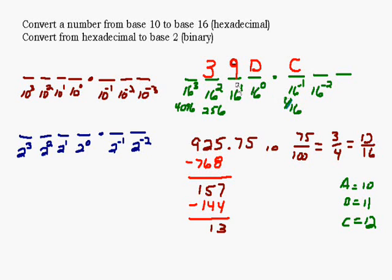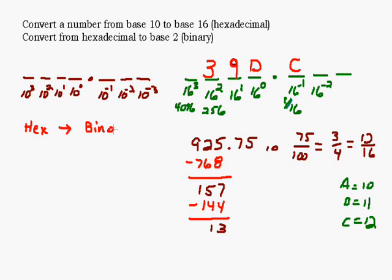So now let's take this 39D.C and convert it to binary. Now, when you do that, there's a really easy way to do that. And what you should do is generate a chart. We can go ahead and do that. You could look this up online, but it's not too bad. What you want to do is generate a chart that goes hexadecimal to binary, just character by character. Or value by value, I should say.